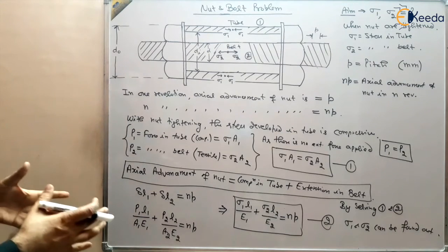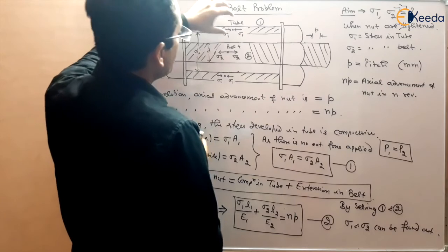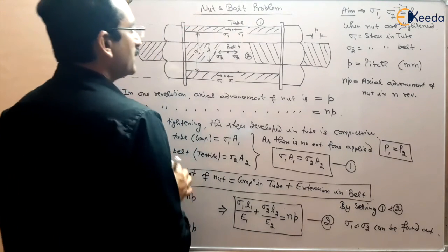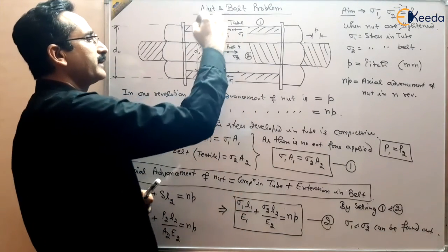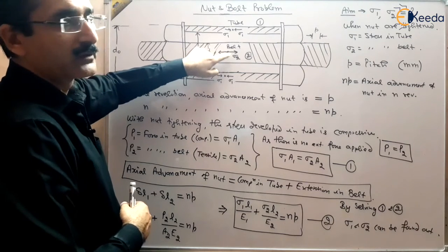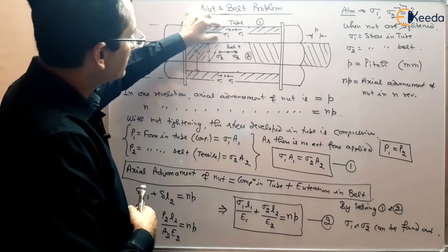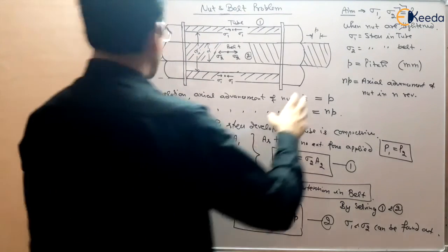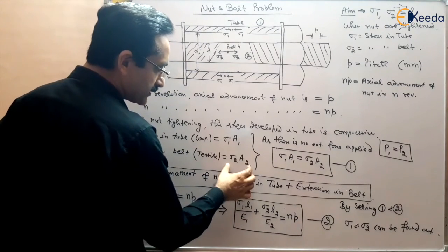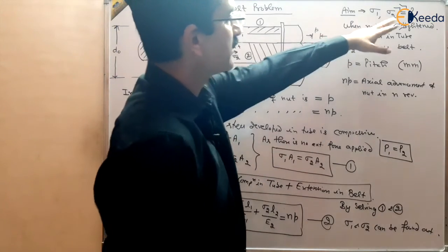This is how we obtain the stresses in tube and bolt in a nut and bolt problem. Tightening of the nut causes compressive stress in the tube and compressive forces in the tube. As there is no external force applied, the internal force developed in the bolt should be equal to that in the tube. So due to this compressive force in the tube, there will be tensile load and tensile stresses developed in the bolt. Since the two forces are equal — P1 compressive in tube and P2 tensile in bolt — sigma 1 A1 equals sigma 2 A2.